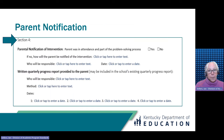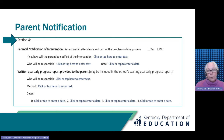Section 4 provides space to document parent participation. Parents are a required member of the Reading Improvement Team, so there is space to record whether they were in attendance or how they were involved if they were unable to attend. There's also space to record who will be responsible for providing the written quarterly progress report to the parent, the method used, and the dates provided.